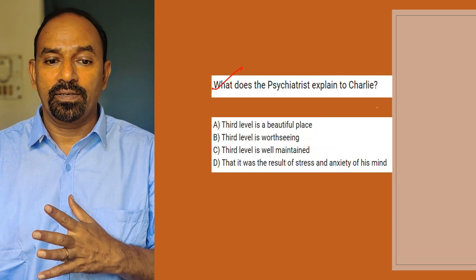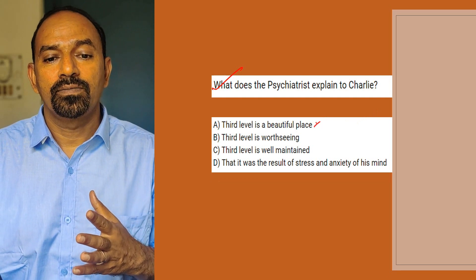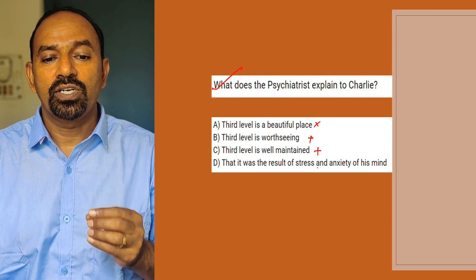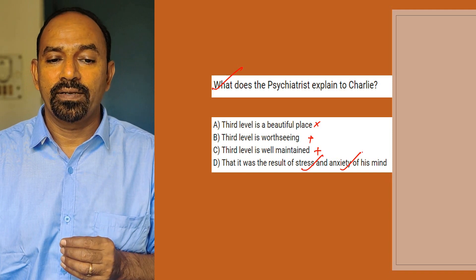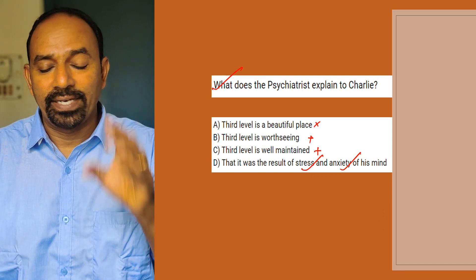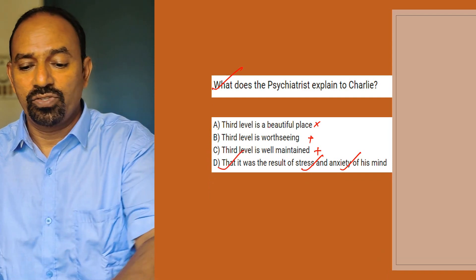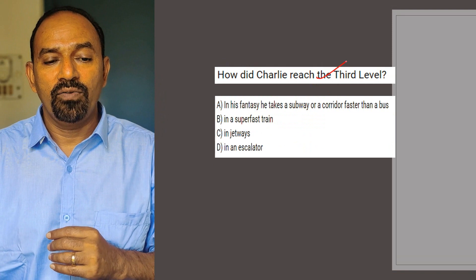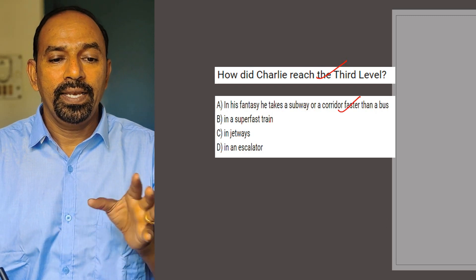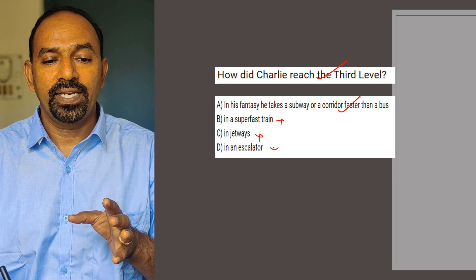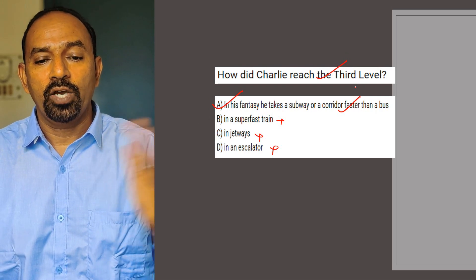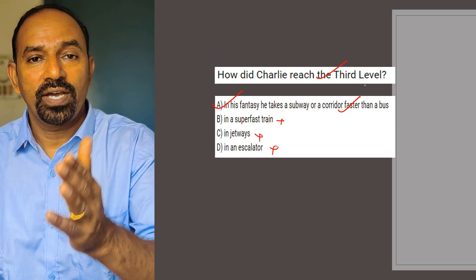Next question: What does the psychiatrist explain to Charlie? Options: the third level is a beautiful place; it is worth seeing; it is well maintained; it was the result of stress and anxiety of his mind. The psychiatrist friend explained to Charlie that the third level was the result of his stress and anxiety. So D is the right answer. Next question: How did Charlie reach the third level? In his fantasy he takes a subway or a corridor faster than a bus, reaching the third level.